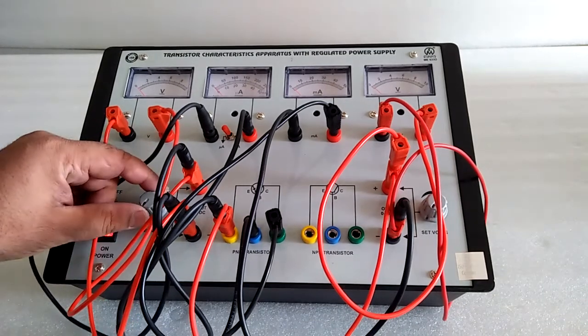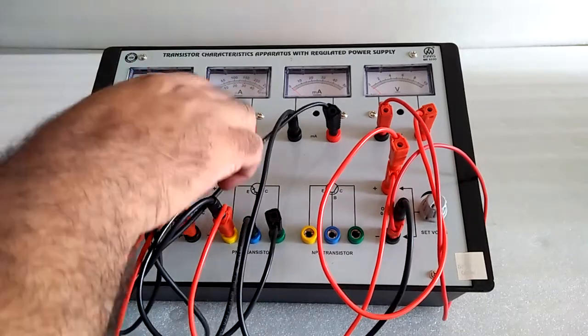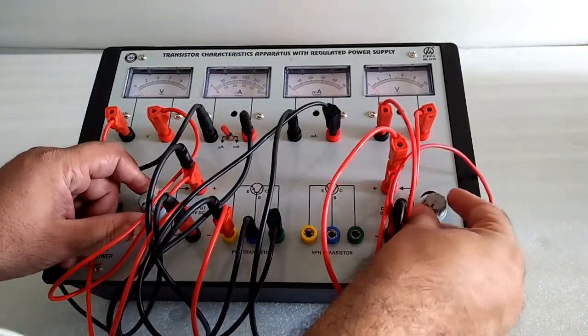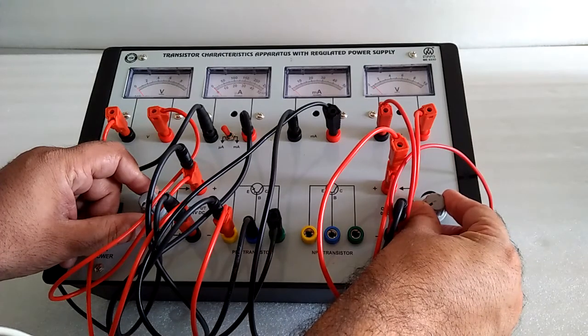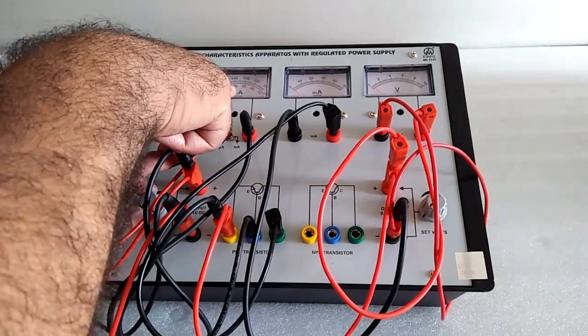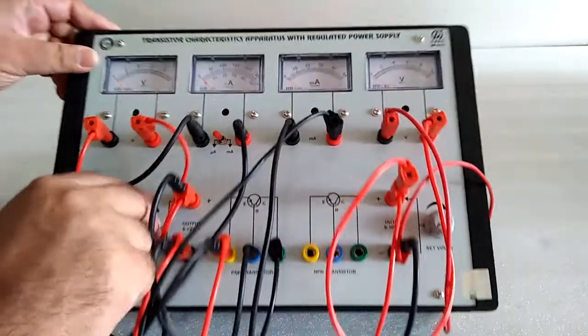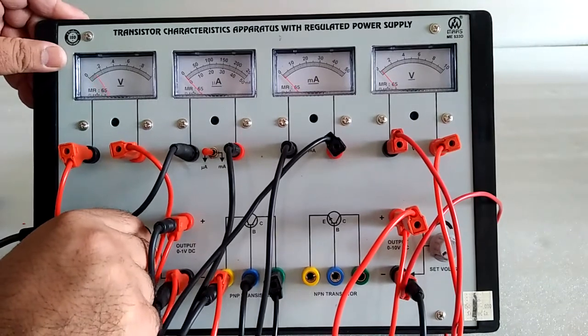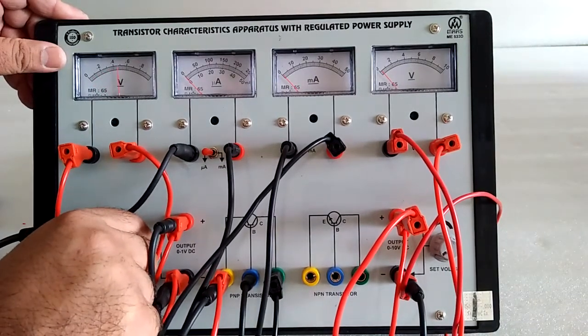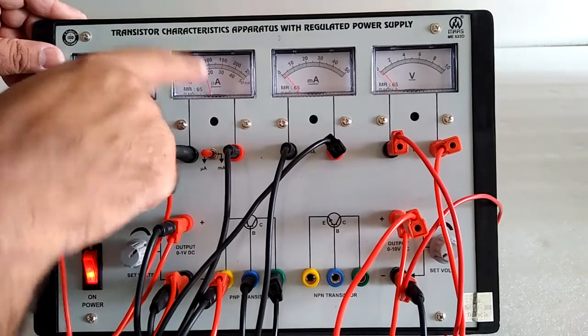For the output characteristics, the current meter is in microampere. There is the VCE. Set the VBE, with the help of VBE, to get IB at, suppose, 75 microampere.